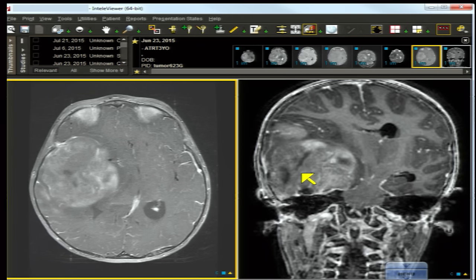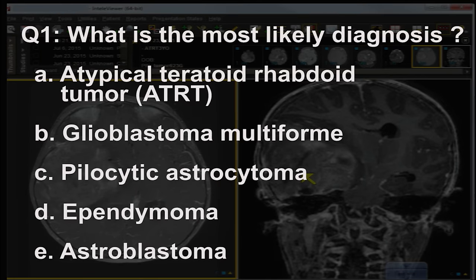The most likely diagnosis is atypical teratoid rhabdoid tumor (ATRT). These lesions present in one-, two-, and three-year-olds — the age is appropriate, the size is appropriate, and the aggressiveness is appropriate. This is not consistent with GBM, which occurs in adults and is uncommonly seen in children.